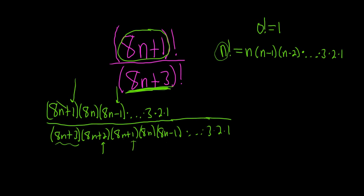And look at this. This is just beautiful. All of this just goes away. It just doesn't get any better. So we get equals 1 over, and then we get 8n plus 3, 8n plus 2.